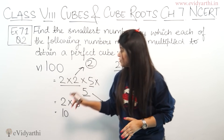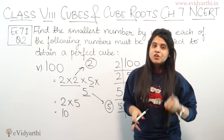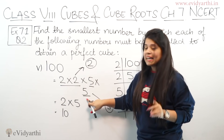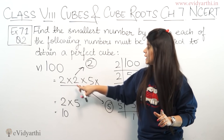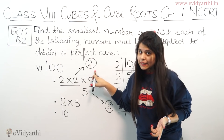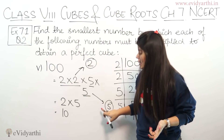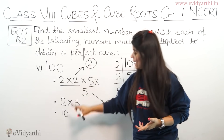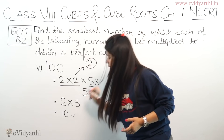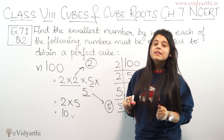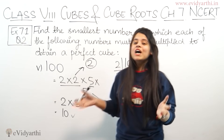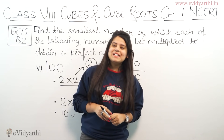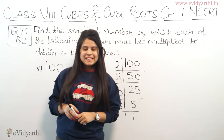You have to understand that we need to form triplets here. Not even one triplet existed. We multiply by 2 to form one triplet, and by 5 to form another. So 5 × 2 = 10. That's why we are multiplying by 10. So this was question number 2.